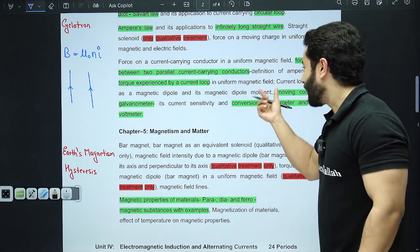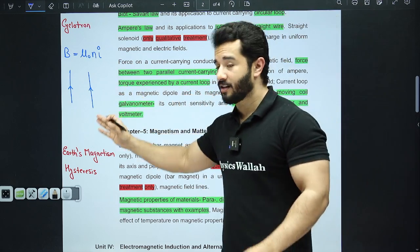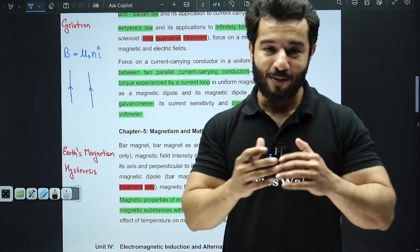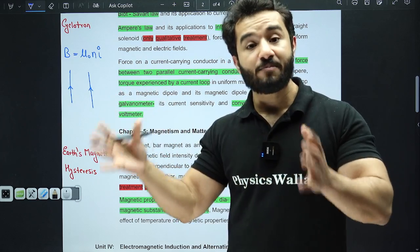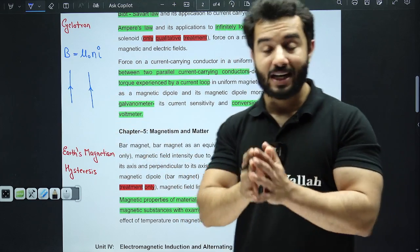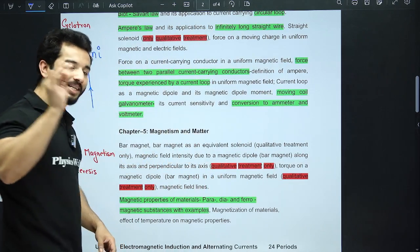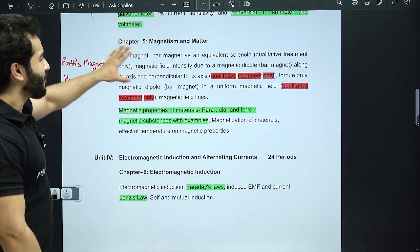Please remember things like if the direction of the currents are same, they attract. Most of the times we have read same things repel, but here same things attract. Same direction of current will attract, opposite direction will repel. Make a note of it. Galvanometer is important, its conversion is also important. You can get some numerical from here.